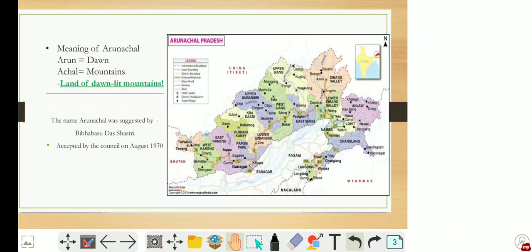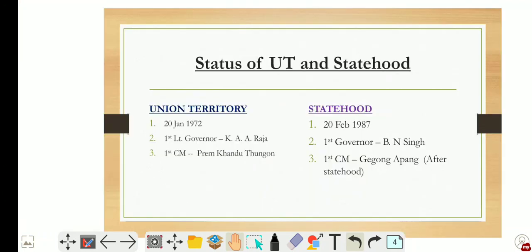Now coming to when we got the status of Union Territory and Statehood. First, let's focus on Union Territory. We got the status of Union Territory on 20th January 1972. On the same day, there were some states which were given the status of statehood. I would request you guys to check out those states which got statehood on the same day.